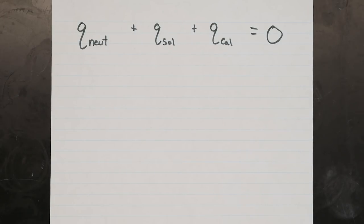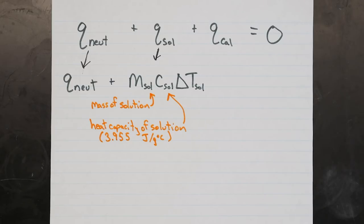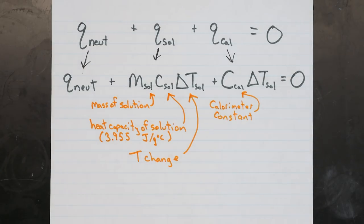The heat of neutralization is actually what we're looking for in this experiment. The heat change of the solution is equal to the mass of the solution times the heat capacity of the solution, which is given in your lab manual, times the temperature change that you record. The heat change of the calorimeter is just the calorimeter constant that you measured in step one, times the temperature change of the solution. Since we weigh the solution and measure the temperature change during the reaction, we have everything we need to know to accurately determine the heat of neutralization.